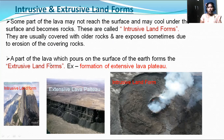The part of the lava which pours on the surface of the earth forms extrusive landforms. For example, on the Deccan you can find the formation of an extensive lava plateau. So there is scope for intrusive landforms and extrusive landforms made by volcanoes. When lava coming from volcanoes does not reach the earth's surface, it cools down under the volcano itself — those landforms are known as intrusive landforms.